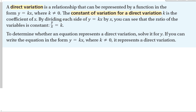If k were 0, then multiplying x by 0 would always give y equals 0 — pretty boring. The constant of variation for direct variation, which is k, is the coefficient of x. By dividing each side of y = kx by x, you can see that the ratio of the variables is constant: y over x equals k, no matter what y and x you have.